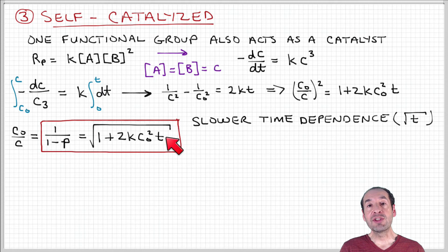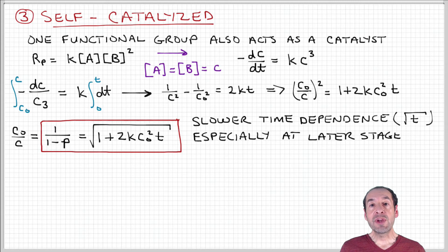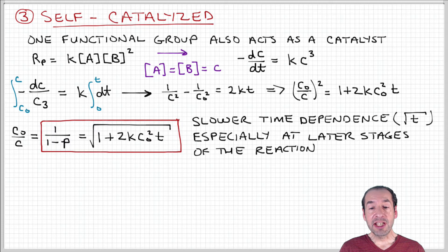instead of linearly with time as we saw in the previous case. So there's a different time dependence, a weaker dependence on time when we have the self-catalyzed case, especially at the later stages of the reaction, because this is when the square root of t is going to be most different from t.